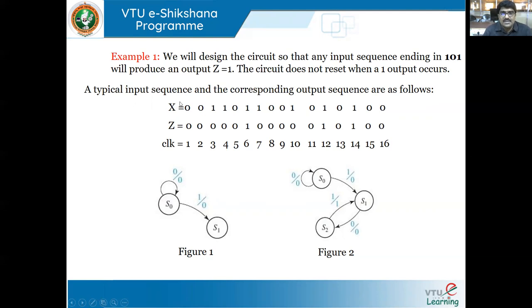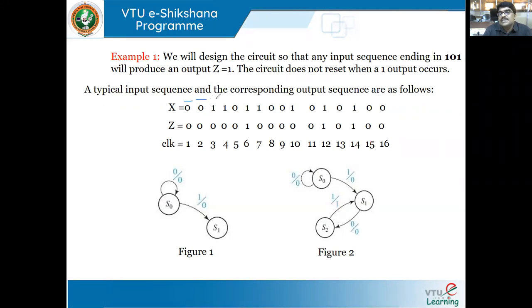We can consider a typical input sequence and the corresponding output sequence. x is the input — a sequence of bits: first zero, then zero, then one, and so on. The corresponding output z should become one only when the one-zero-one pattern is present in the sequence of inputs. The first three inputs are zero, zero, one — the corresponding z is zero, zero, zero because the one-zero-one pattern has not been detected yet.